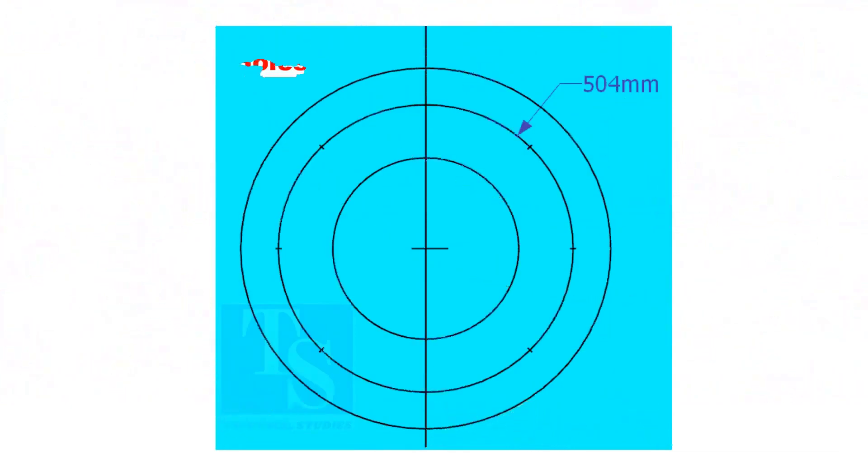Since the number of the holes is 8, divide the PCD into 8 equal parts. To divide the circle easily and accurately, let us find the cord length of the holes.